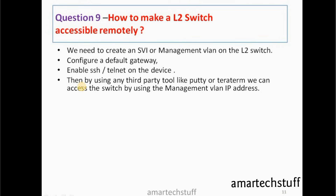Question number nine: how to make an L2 switch accessible remotely? An L2 switch cannot have IP addresses assigned to its interfaces since all interfaces act as Layer 2. The solution is to first create an SVI or management VLAN on the L2 switch and assign an IP address to it, configure a default gateway on the switch, then enable SSH or Telnet on the device. After that, using a tool like PuTTY or Tera Term, you can access the switch remotely.